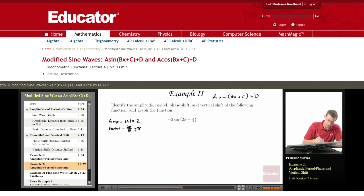The phase shift is negative C over B, which is, okay, C is negative π over 3. So negative of that is π over 3 divided by 2 will give us π over 6.